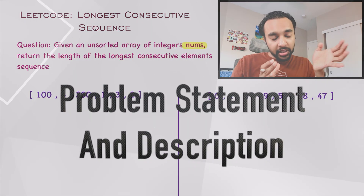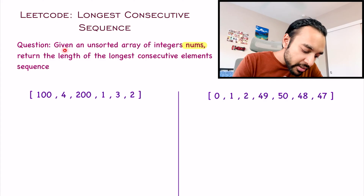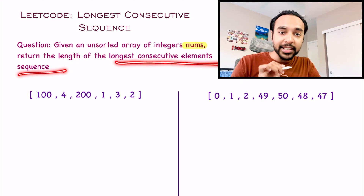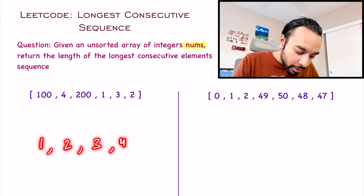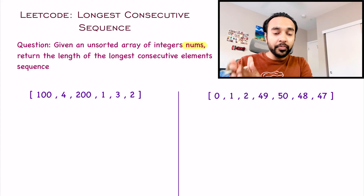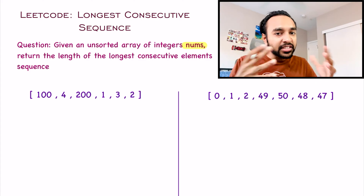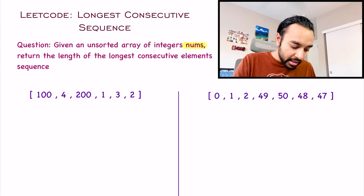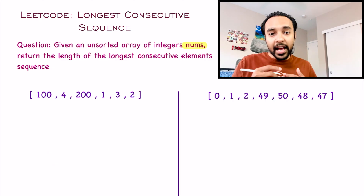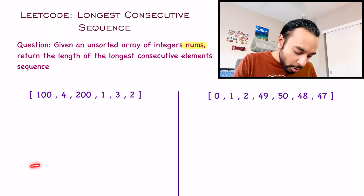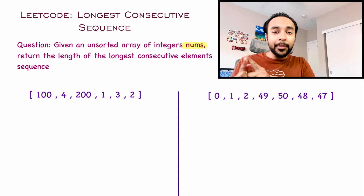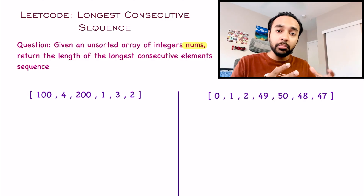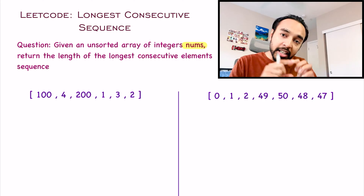Let us make sure that we are understanding the problem statement correctly. In this problem, you are given an unsorted array of integers, and you have to return just the length of the longest consecutive element sequence. A consecutive sequence is something like 1, 2, 3, 4 — all elements separated by 1. Given an array, there could be multiple such sequences, and you have to return the length of the longest one.